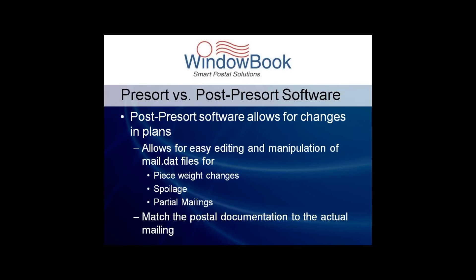During the physical preparation of the mail, pieces can get damaged or spoiled and then they get pulled from the mailing. Sometimes they get reprinted and manually inserted back into their proper handling units, but most times they simply get pulled and either mailed separately or just not mailed at all. Post-presort software can be used to edit these Mail.Dat files so these pieces are not reported as part of the mailing, and most importantly, postage is not wasted on them.